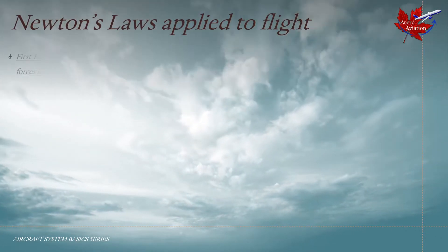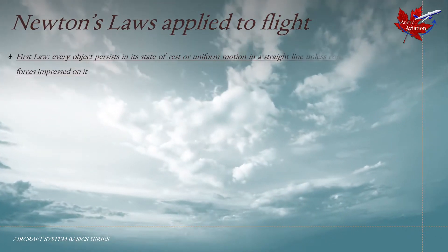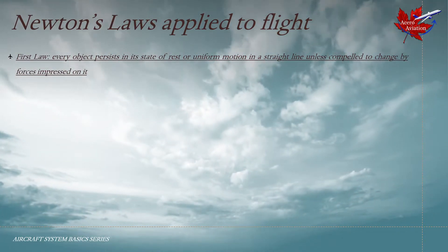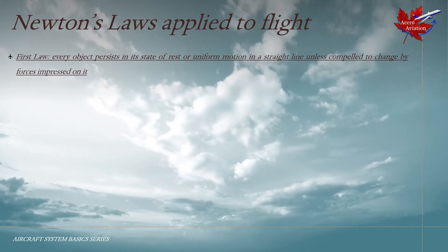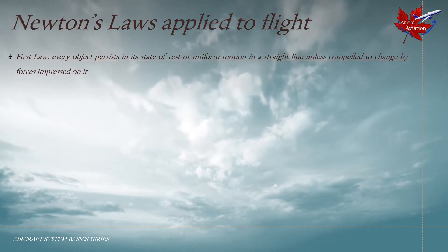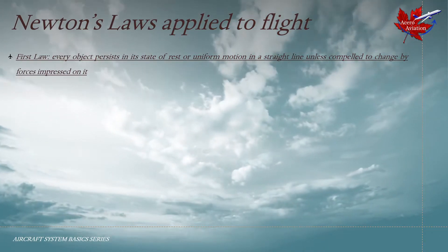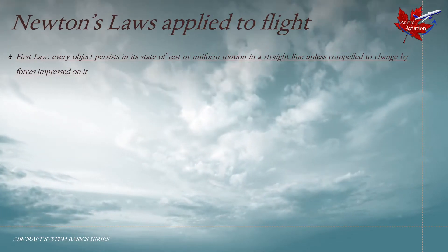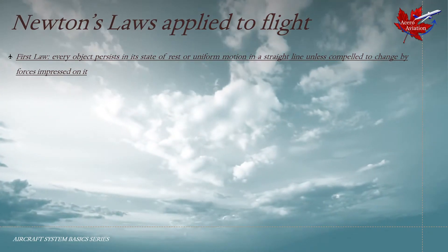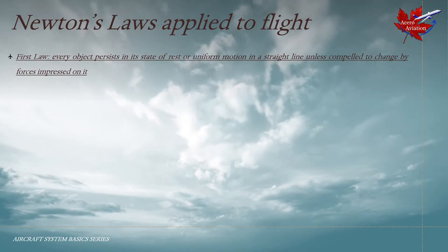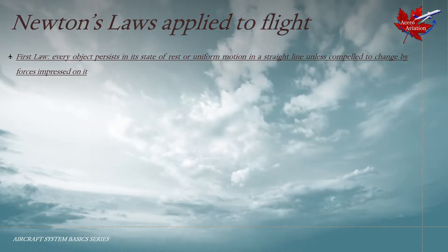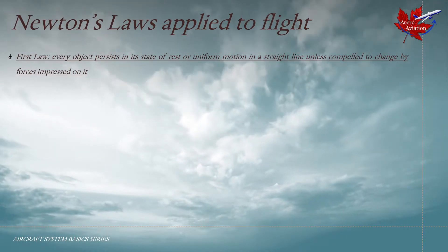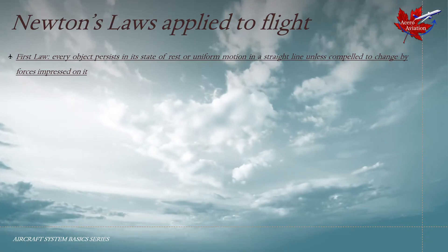Newton's laws as applied to flight. The first law states that every object persists in its state of rest or uniform motion in a straight line unless compelled to change by forces impressed upon it. So if there is no net force resulting from unbalanced forces acting on an object — that is, if all the external forces cancel each other out — the object will maintain a constant velocity. If the velocity is zero, the object remains at rest, and if an additional external force is applied, the velocity will change because of that force.